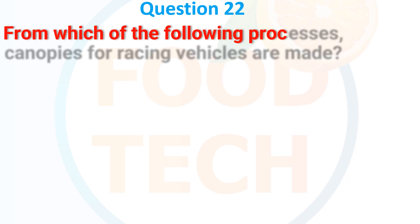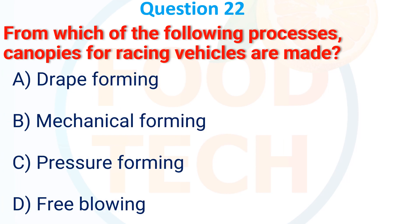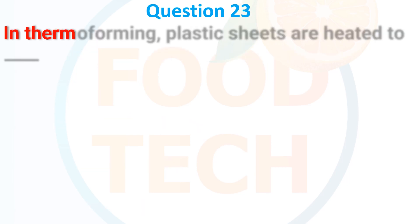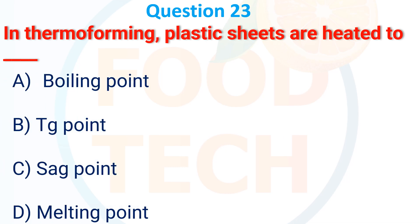From which of the following processes are canopies and racing vehicle parts made? (a) Draft forming, (b) Mechanical forming, (c) Pressure forming, (d) Free fall blowing. The answer is (a) Draft forming.